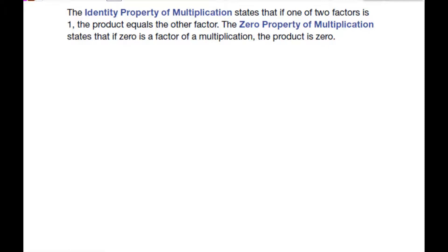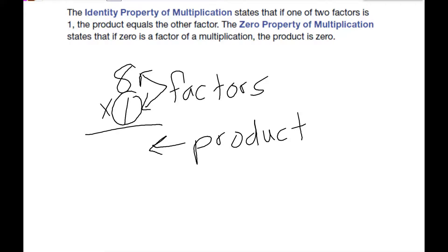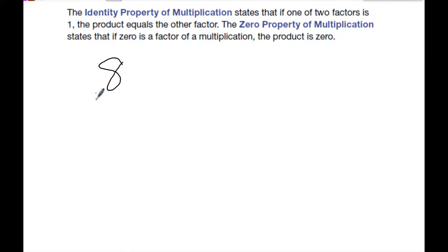Our next thing is the identity property of multiplication. This property states that if one of the two factors is one, the product equals the other factor. Remember in a multiplication problem, if I have eight times one, these numbers here are called factors and the answer is called the product. So this is saying if one of the factors is one, then the answer is the other factor. So eight times one is eight. 1,111 times one is 1,111. It doesn't matter what I multiply by. If one of the factors is one, the answer is always the other factor.